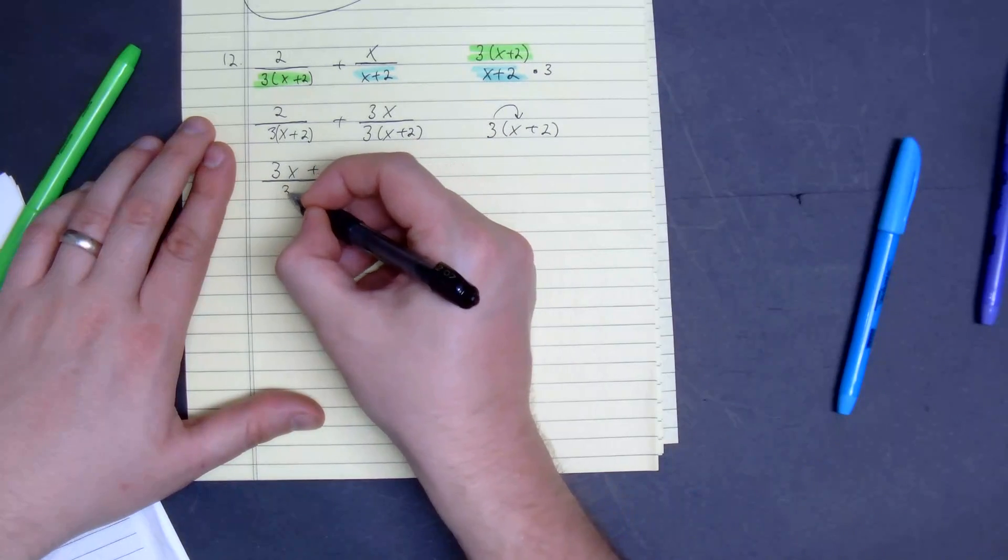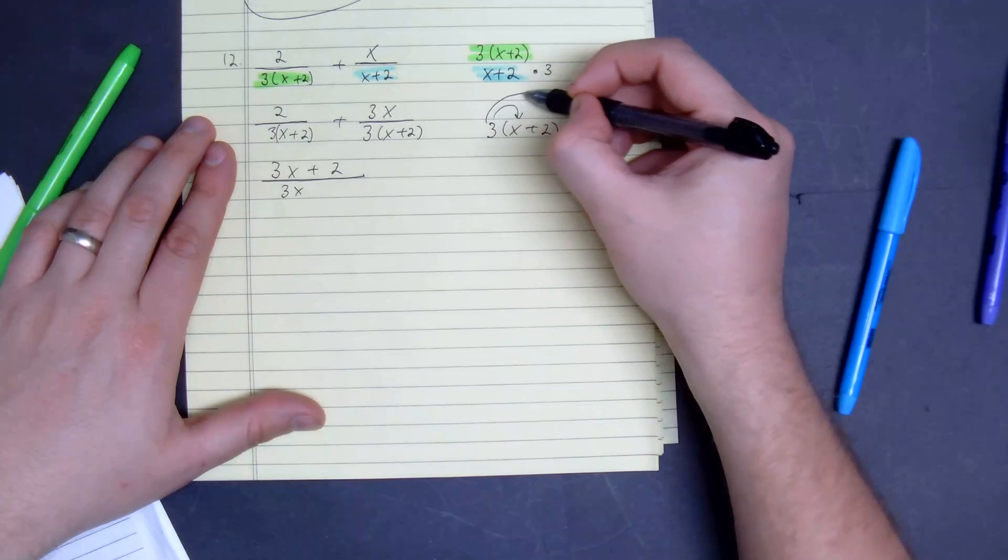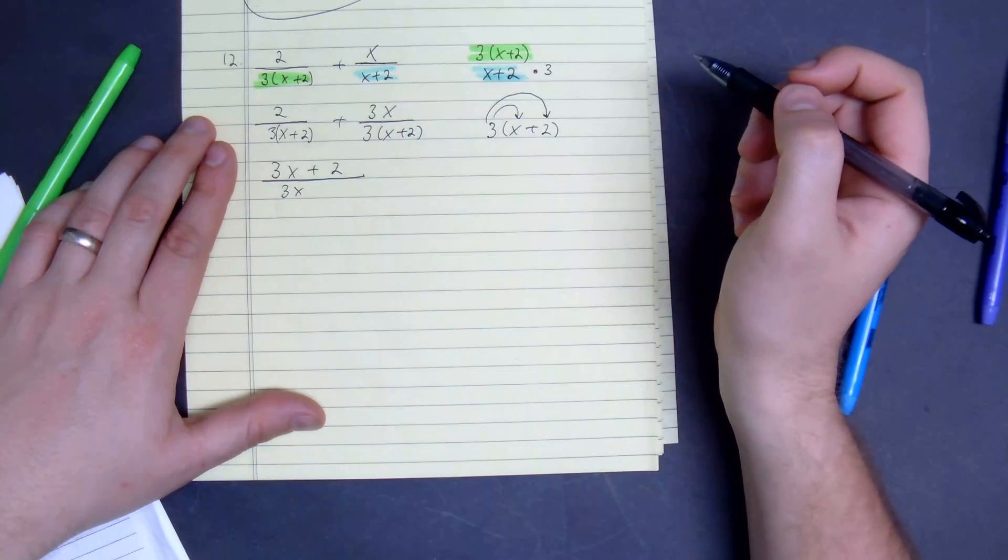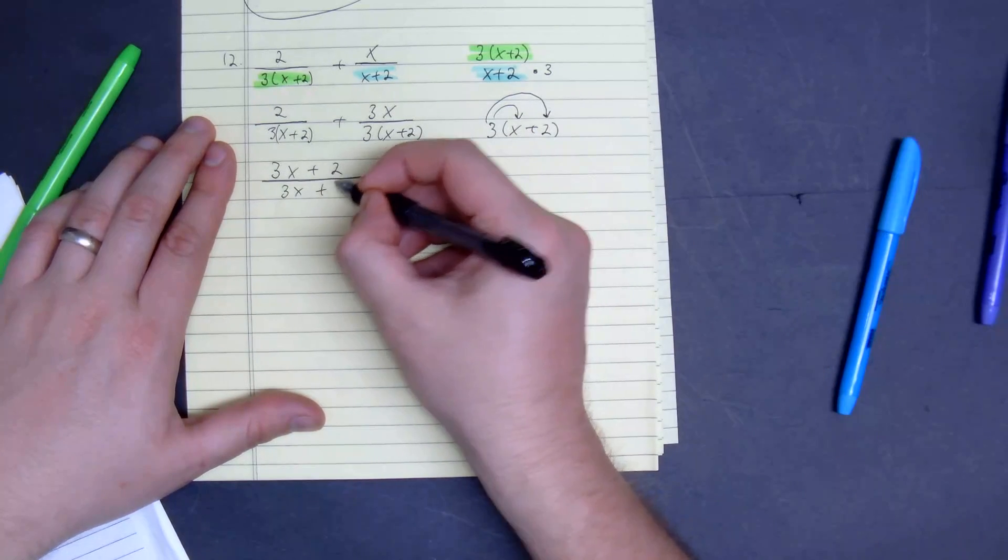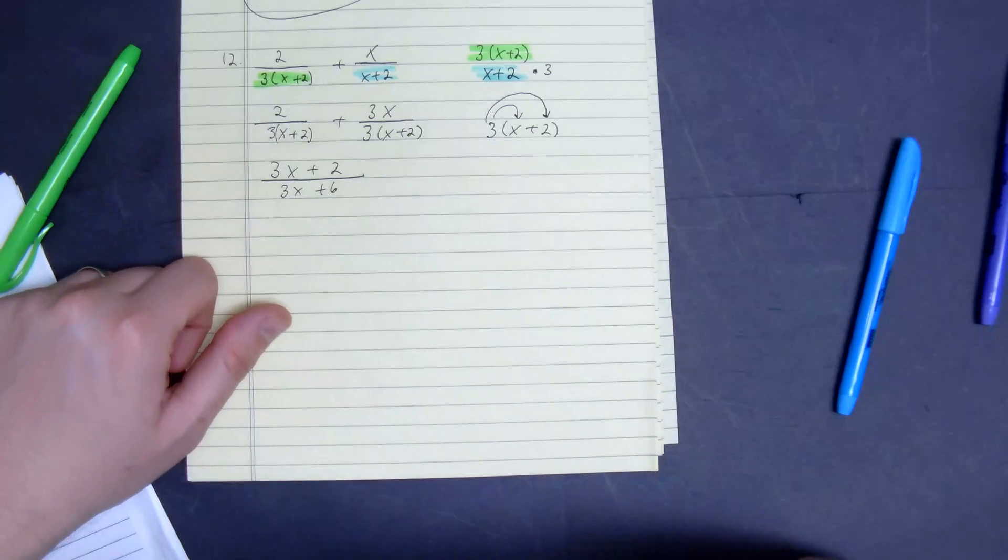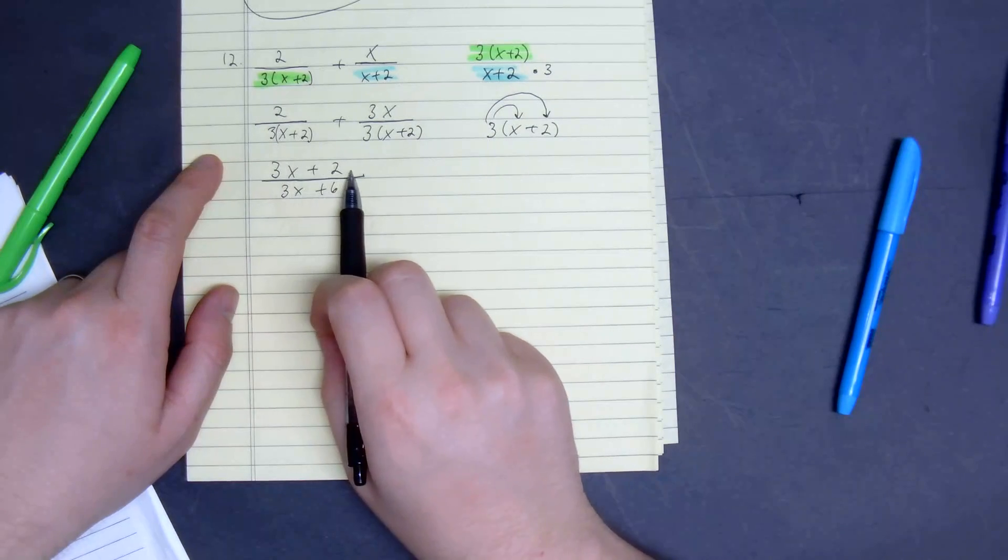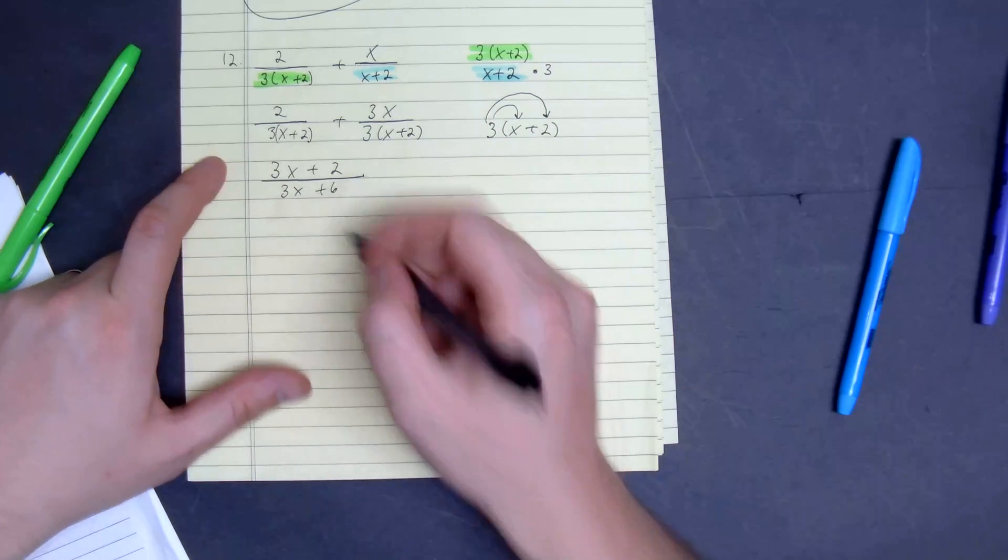3 times x gives us 3x, and then we get 3 times 2, which gives us plus 6. So our final answer here would be 3x plus 2 divided by 3x plus 6.